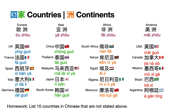Examples of country names: The UK — 英国. France — 法国. Spain — 西班牙. Italy — 意大利. Germany — 德国. China — 中国. Thailand — 泰国. Malaysia — 马来西亚. Japan — 日本. South Korea — 韩国. South Africa — 南非. Kenya — 肯尼亚. Egypt — 埃及. Nigeria — 尼日利亚. Morocco — 摩洛哥. USA — 美国. Canada — 加拿大. Mexico — 墨西哥. Brazil — 巴西. Argentina — 阿根廷.